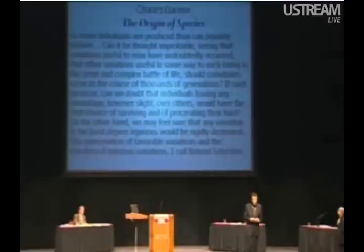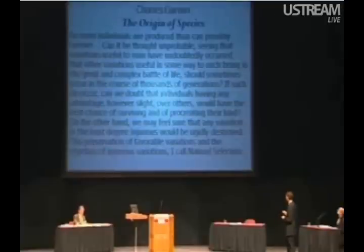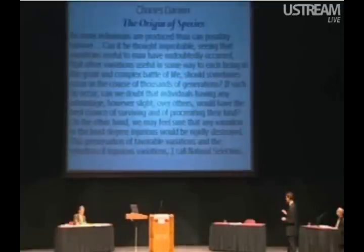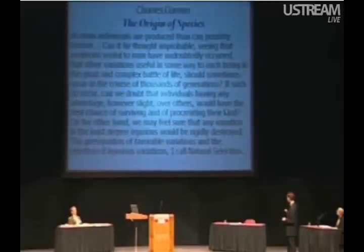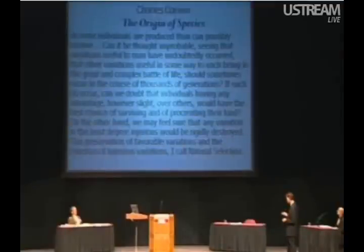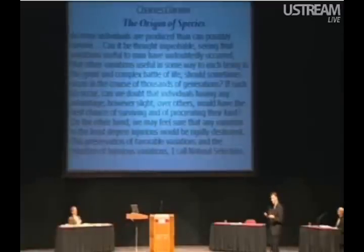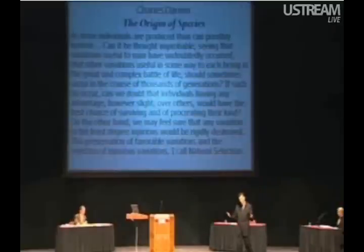This is one of the places where he summarizes natural selection. I want you to pay attention to a couple of sentences: 'If such do occur — hereditary variations that can give advantage to their carriers — can we doubt that individuals having any advantage, however slight, over others could have the best chance of surviving and of procreating their kind? On the other hand, we may feel sure that any variation in the least degree injurious would be rigidly destroyed.' This preservation of favorable variations and the rejection of injurious variations, he calls natural selection — one statement of many, because the theory of natural selection is developed over nine of the 14 chapters.